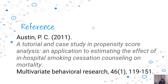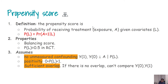Before I talk about the implementation detail, let me define what propensity score modeling is. A propensity score model is basically the probability of receiving treatment given covariates — that means we are trying to get the probability of being selected or receiving the treatment or being exposed given the observed covariates.